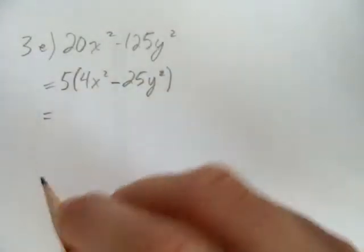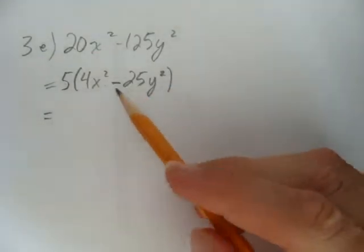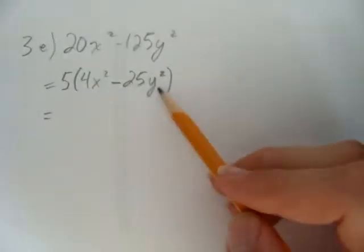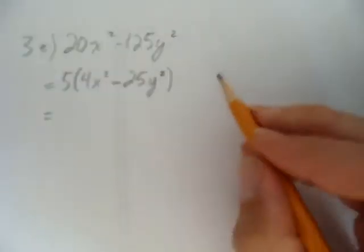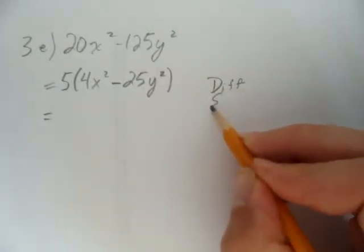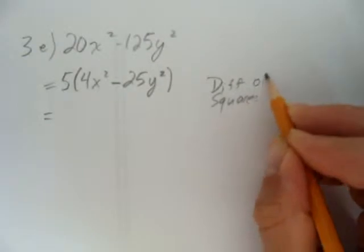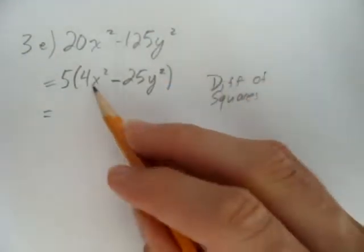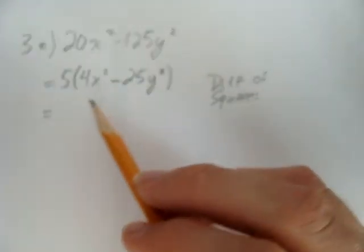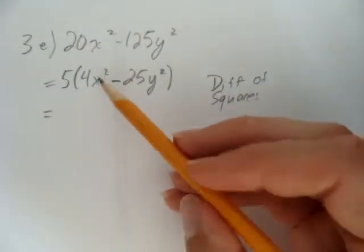Now we don't really have a good factoring algorithm in general that handles x squared and y squared, but we do have this concept called difference of squares. That is to say, when you have a square take away a square — everything is square in both terms — you can use a little formula.